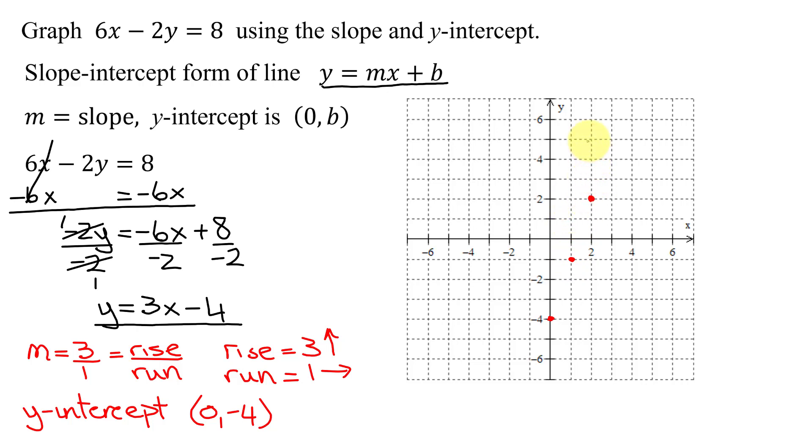1, 2, 3 up, 1 to the right. And if I want points to the left of the y-axis, I can reverse both of these. I can go down 3 and left 1.